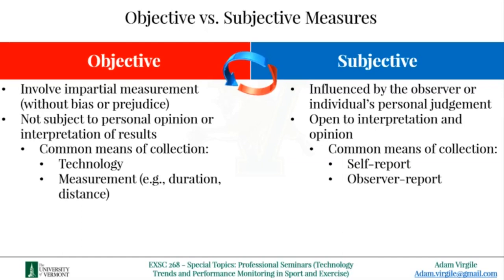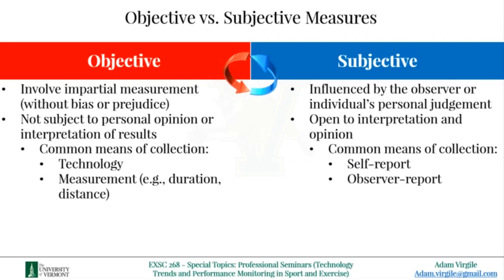First, let's discuss what objective and subjective measures are. Objective measures involve impartial measurement which innately don't contain any bias or prejudice. A few examples might be the amount of weight you lifted in pounds or kilos, the distance you ran in meters, or how high you jumped in inches. Typically these measures require some piece of technology or tool such as a stopwatch to collect the information.